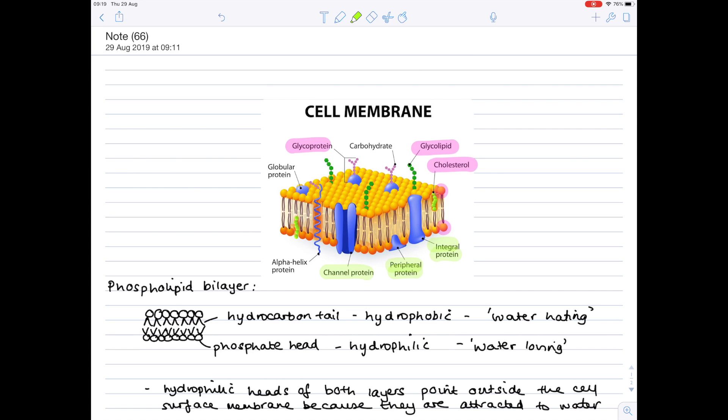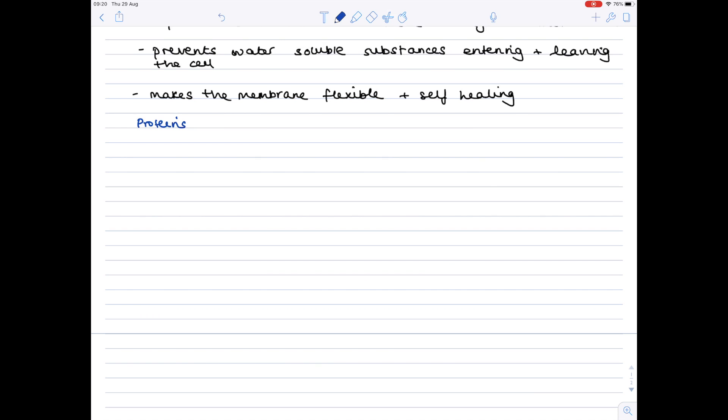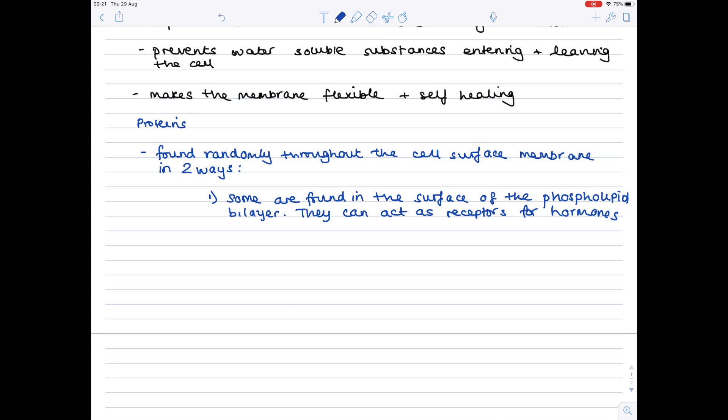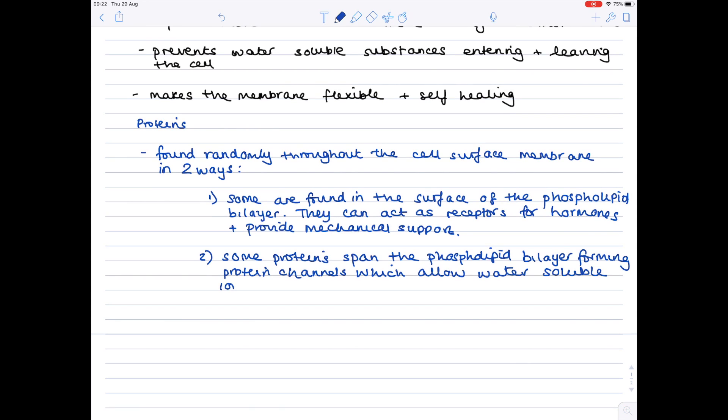I'm sure you can imagine that the channel proteins will be involved in moving things in and out of the cell, whereas peripheral proteins will have a slightly different role. They are found randomly throughout the cell surface membrane in two ways. Number one, some are found in the surface of the phospholipid bilayer. They can act as receptors for hormones and provide mechanical support. Some proteins span the phospholipid bilayer, forming protein channels which allow water-soluble ions to diffuse across the membrane.